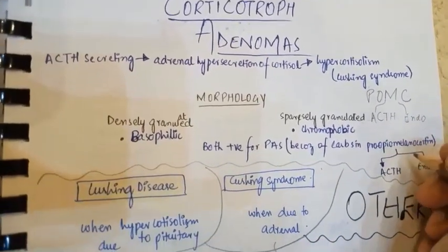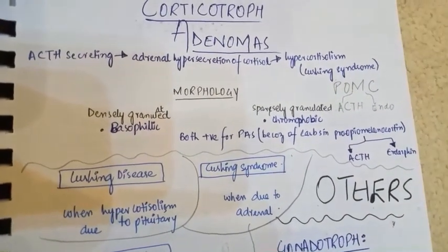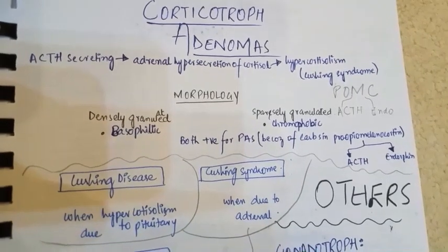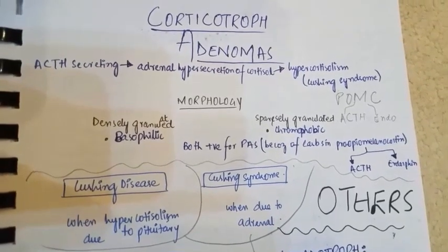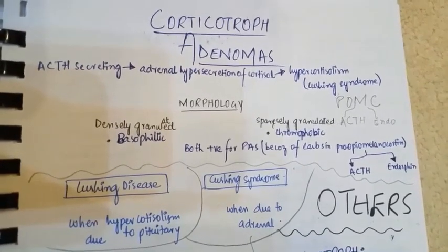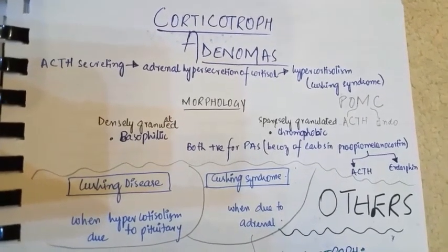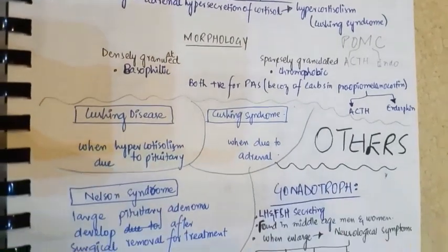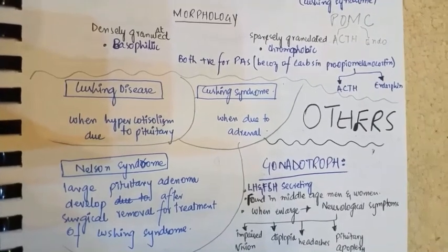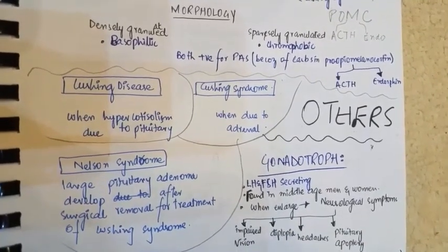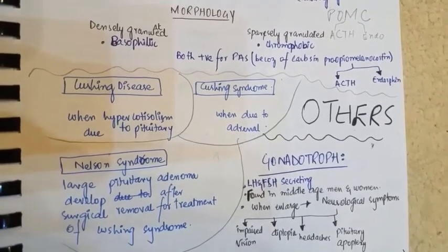When there is hypercortisolism due to pituitary disease, this is known as Cushing disease. When there is hypercortisolism due to adrenal gland pathology, this is known as Cushing syndrome. Nelson syndrome is when a large pituitary adenoma develops after the surgical removal of the adrenal glands as treatment for Cushing syndrome.